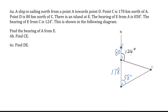We are looking for the bearing of A from E, so we draw the north line at E and label this angle as theta. This angle is the exterior angle of triangle A, E, C. Let's label the interior angle at E as alpha. Since theta is the exterior angle of triangle AEC, we have 124 equals 58 plus alpha, so alpha equals 124 minus 58 degrees.